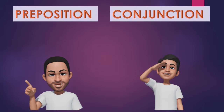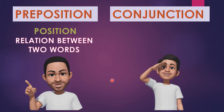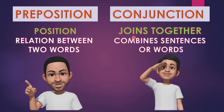Now we move on to the next parts of speech. In this family there are two servants — preposition and conjunction. Preposition is the chief servant. He is the official servant of his master and he always denotes the position — that is, the relationship between two words. Next, conjunction is the family servant. He looks after each and every member of the family and combines everything together. It may be a sentence, a word, a phrase, or a clause. This conjunction joins them together.